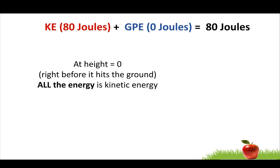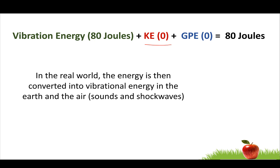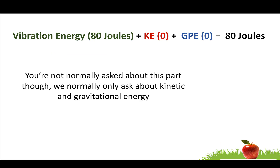At height equals zero, all the energy is kinetic. In the real world, the reason the apple doesn't go forever is not because energy is destroyed — it's because the kinetic energy gets converted into a new type of energy, like vibrational energy in the earth and air, sounds and shock waves. The 80 joules of kinetic energy gets transformed into another form. For now, you only need to deal with kinetic and gravitational energy, but know that in the real world it turns into heat, shock waves, and other less obvious forms.